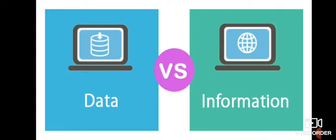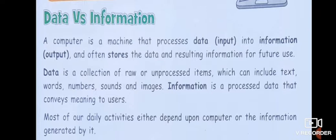Data versus information. I hope you all know about this, as you have studied about it in Class 3. So let's revise it again for better understanding. A computer is a machine that processes data — that is input — into information, that is output, and often stores the data and resulting information for future use.